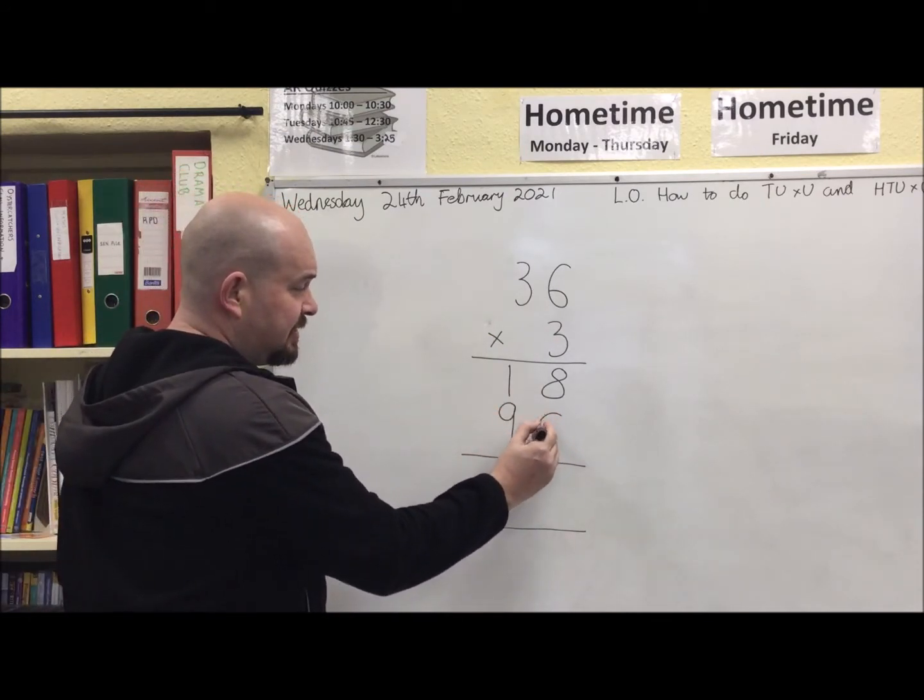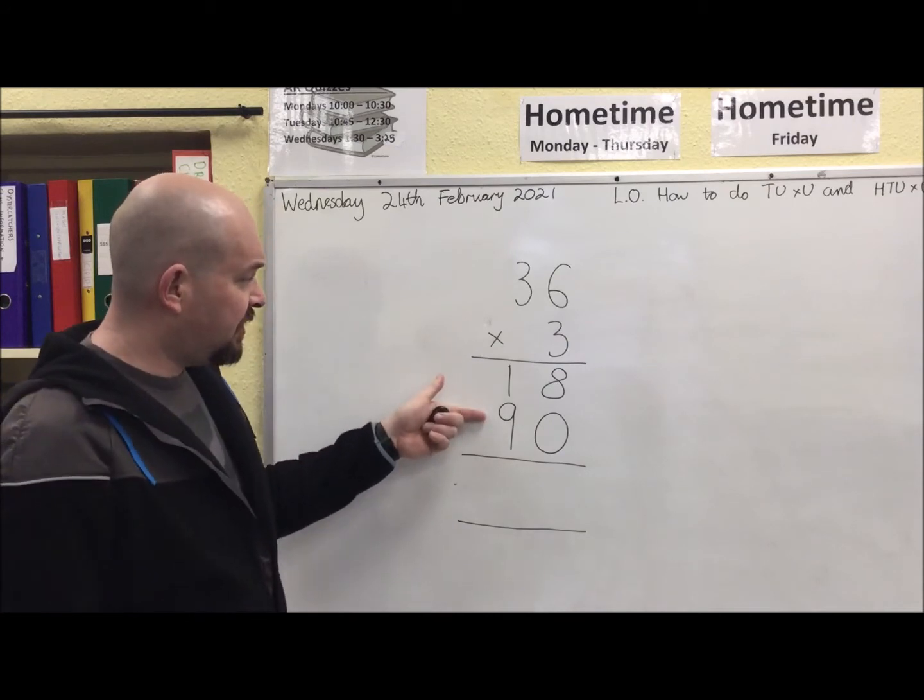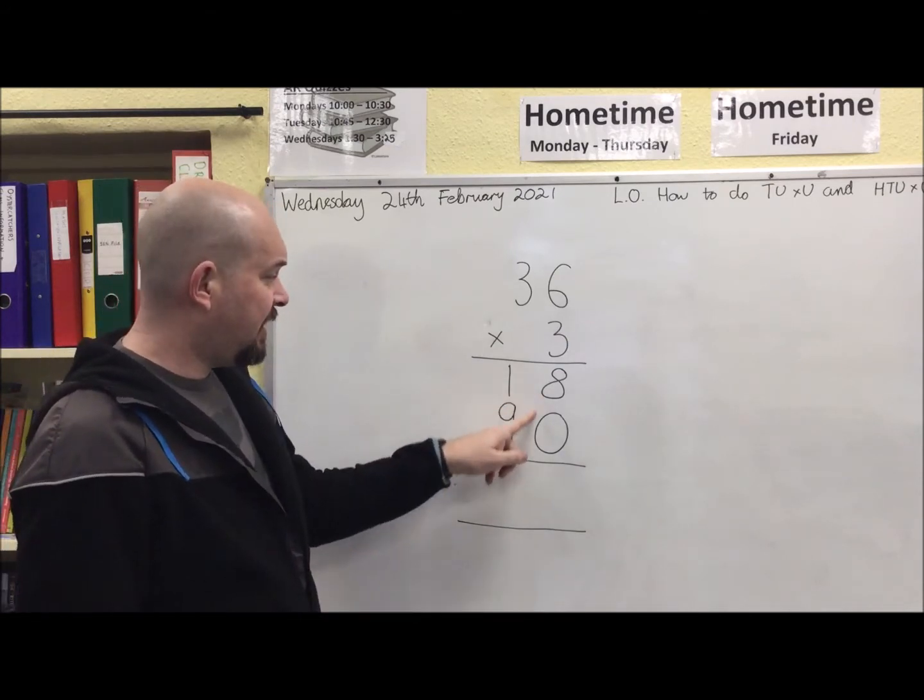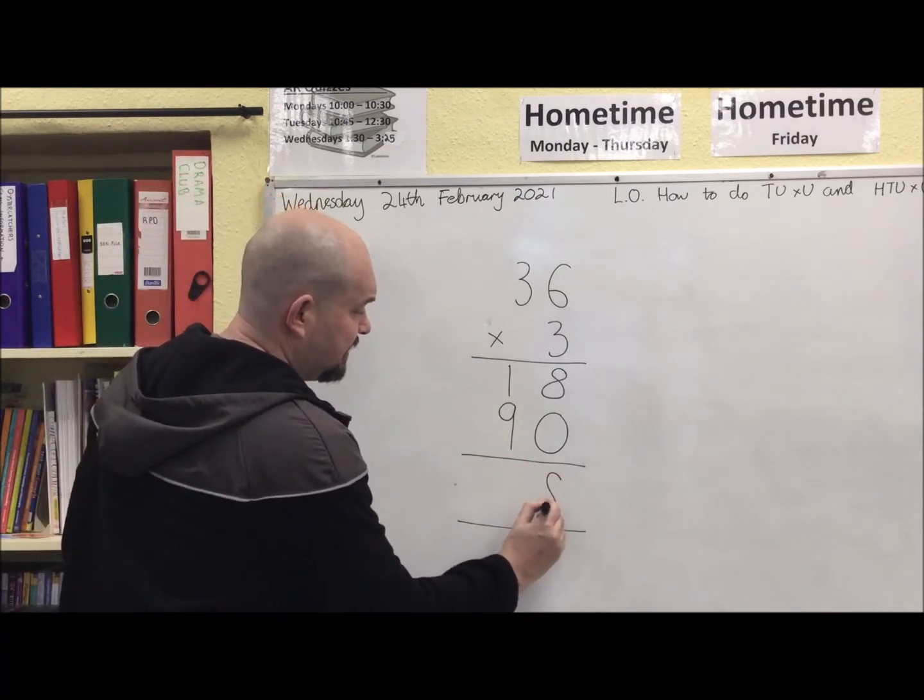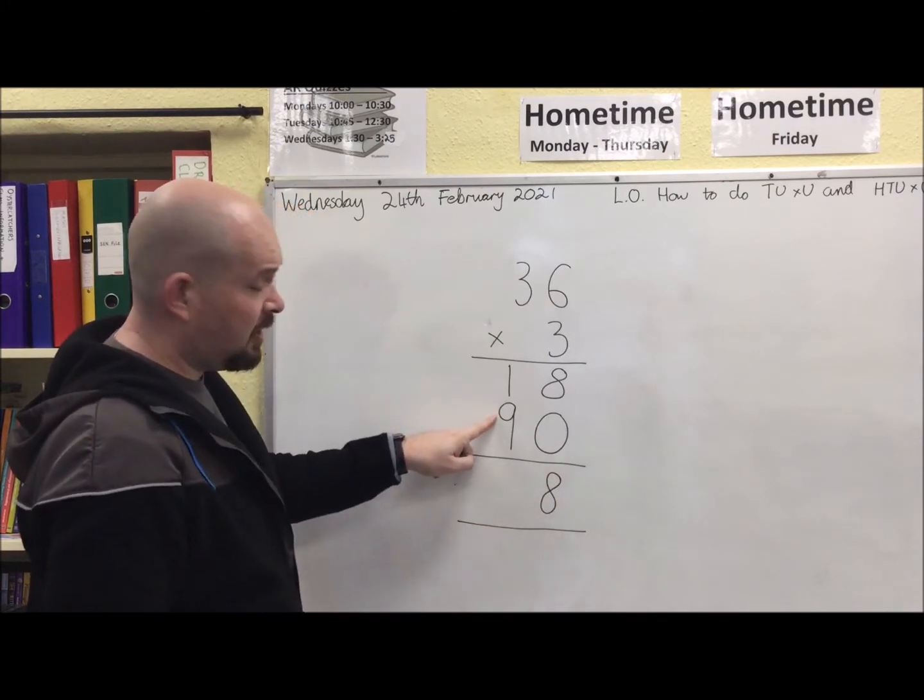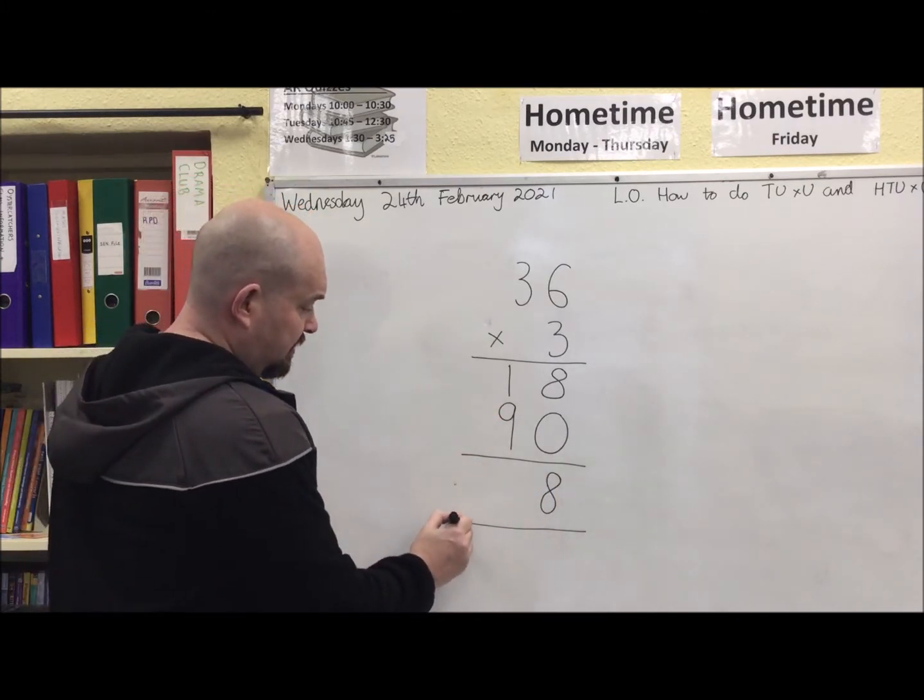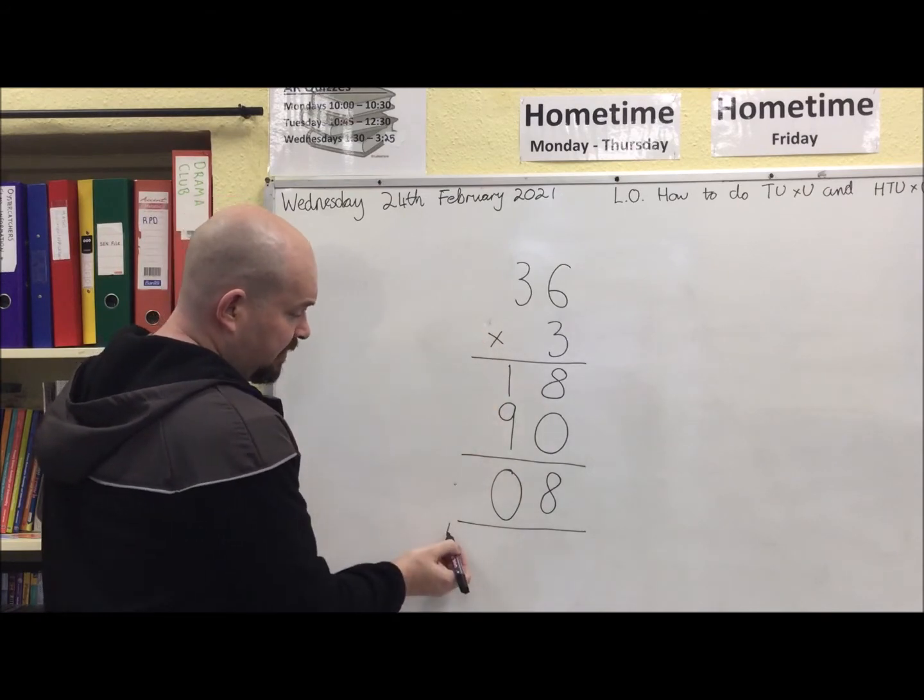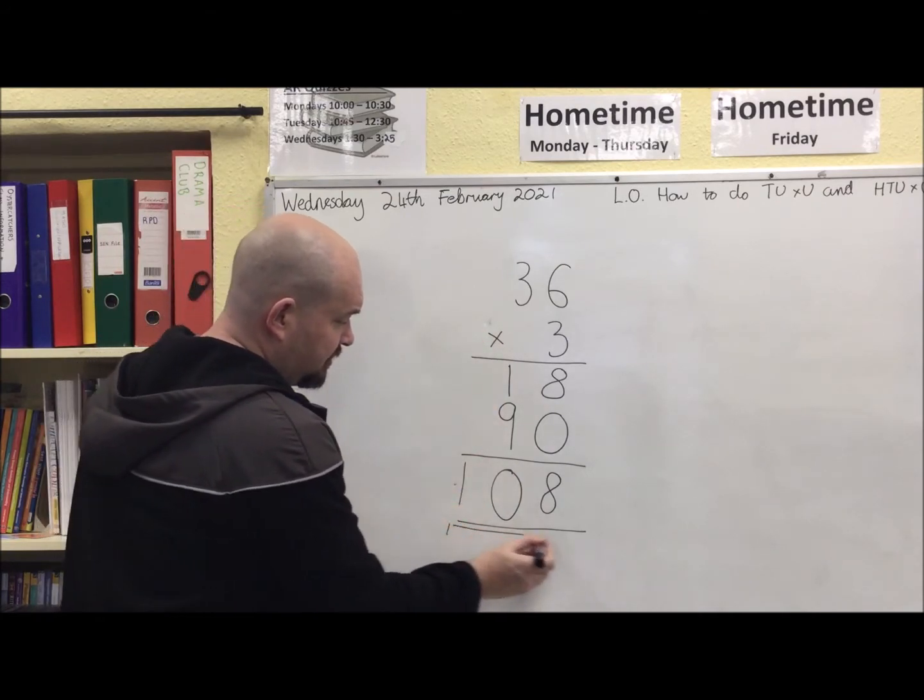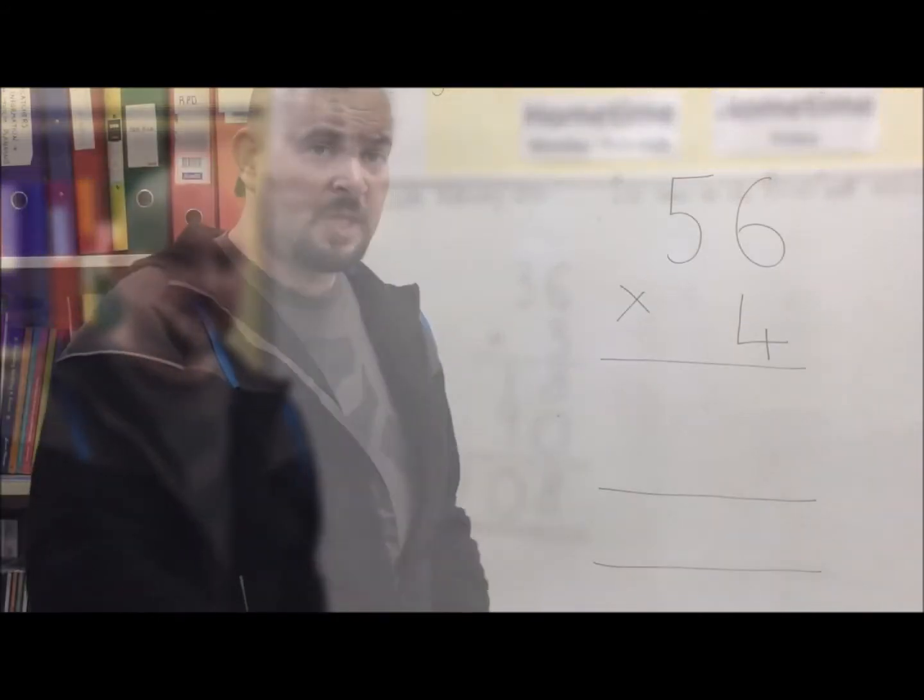Tens lined up with tens. Units lined up with units. Add them together. 8 and nothing is 8. 1 and 9 makes 10. No hundreds to add apart from this one. Answer, 108.